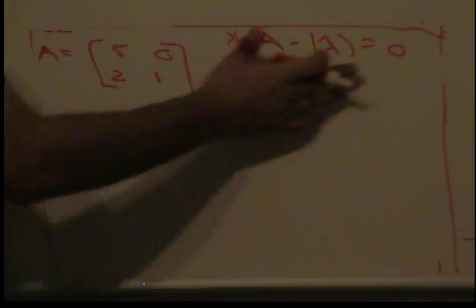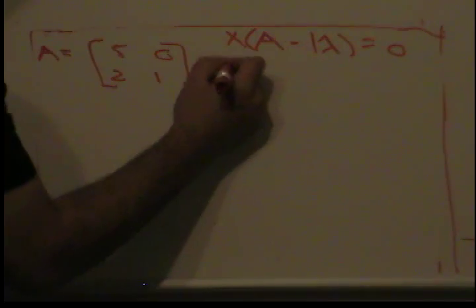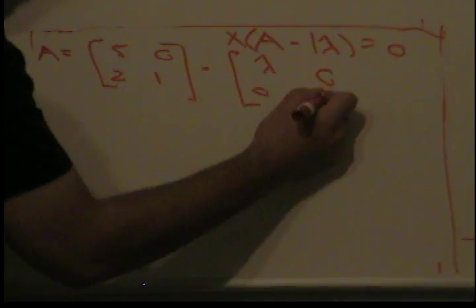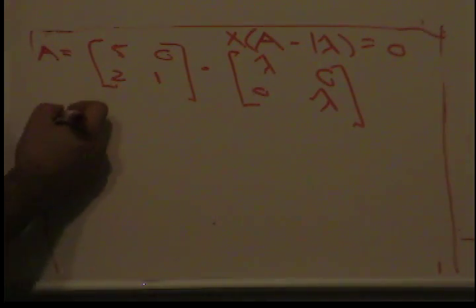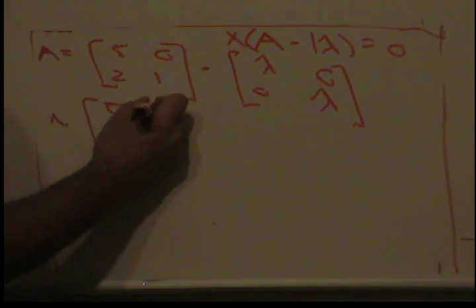According to the formula, I'm going to subtract this by lambda, 0, 0, lambda. So when I do that I get 5 minus lambda, 0, 2, and 1 minus lambda.